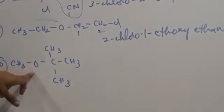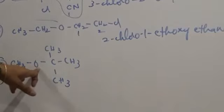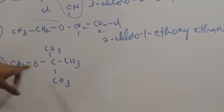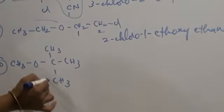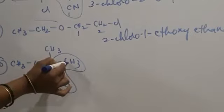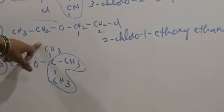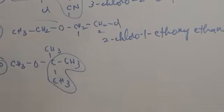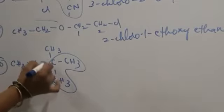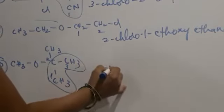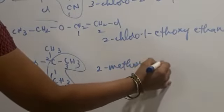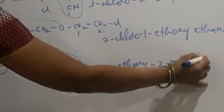One more ether functional group containing compound. This is a methoxy substituent. If you take the straight chain, only 2 carbons; but we take the main chain with 3 carbons: 1, 2, 3. Second carbon bears the methyl substituent. Numbering starts at 1, 2, 3. So the name is 2-methoxy-2-methylpropane.